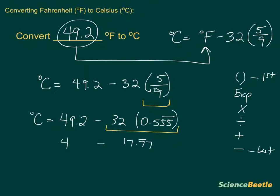you're going to wind up getting 17.77 repeating. Minus, and plug in the rest of the stuff here, 49.2, and that should give you your Celsius. If I now take the 49.2 and I subtract 17.77 from that number, that should give me the degree Celsius that I'm looking for.